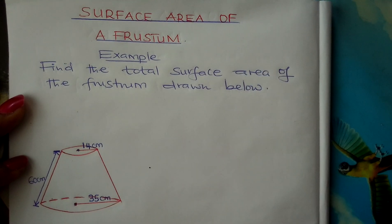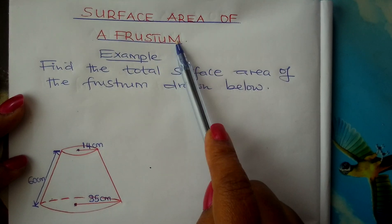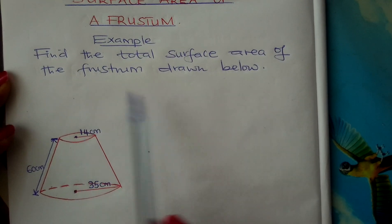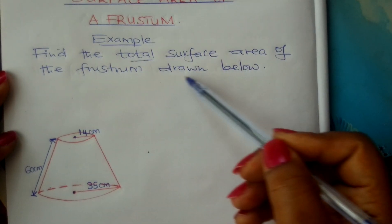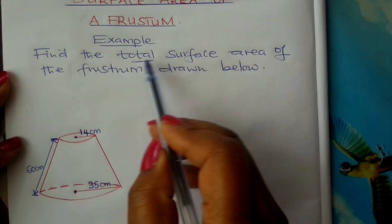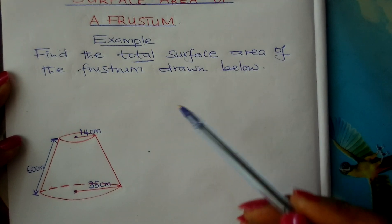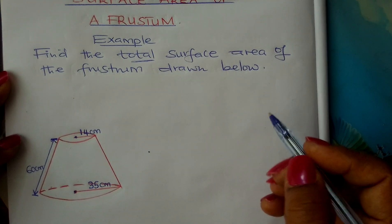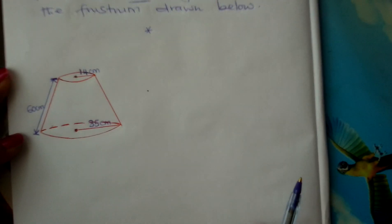Welcome learners to Form 2 Mathematics. We are looking at the surface area of a frustum. Let us look at this example: find the total surface area of the frustum drawn below. When you hear of total surface area, it simply means you find the area of all the surfaces and then you add them.